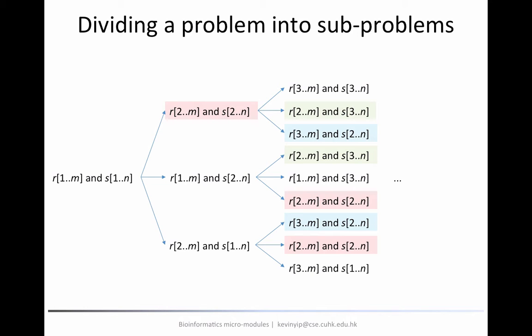In the context of sequence alignment, suppose we want to align two sequences r and s of lengths m and n respectively. If m and n are large, this is a very difficult problem. Instead, we can first consider the first column of this alignment and try all possibilities — there are only three. The first one is we put r1 and s1 into that column, and then we have a new sub-problem, which is to align the remaining parts r2 to m with s2 to n.